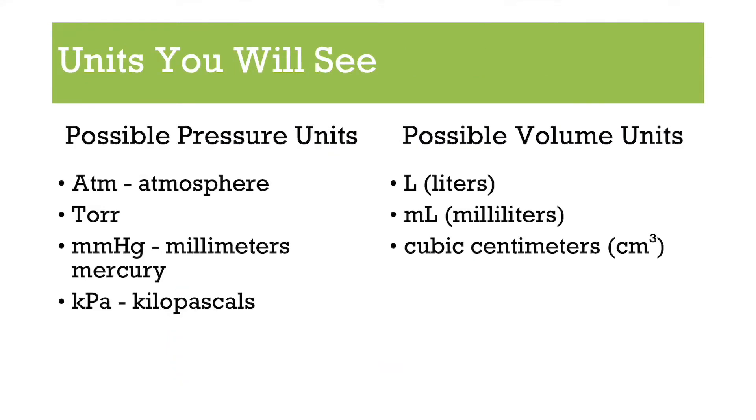So just to kind of show you some units, there's a bunch of pressure units, there's a bunch of volume units. So more importantly, pressure, you'll see ATM, which means atmosphere, not at the moment, you'll see something called torr, millimeters of mercury, and kPa, which is kilopascals. All of those are units of pressure, and you might see them throughout the different videos. For volume, generally, you'll see liters, milliliters, cubic centimeters. Those are the kind of top three you'll see.